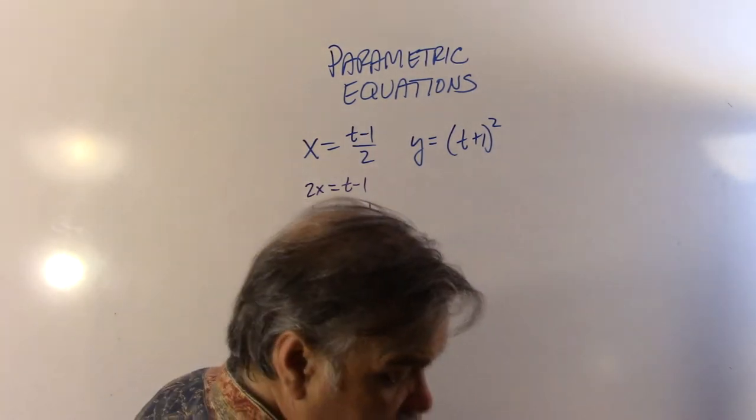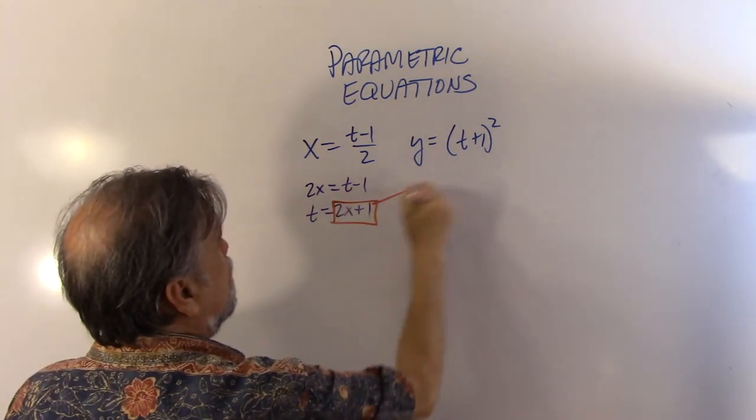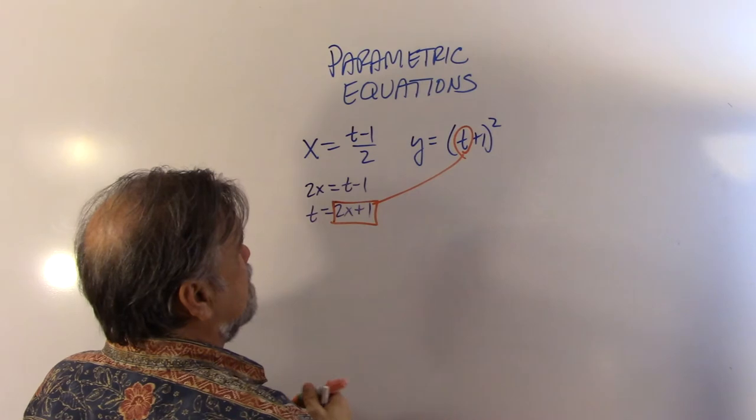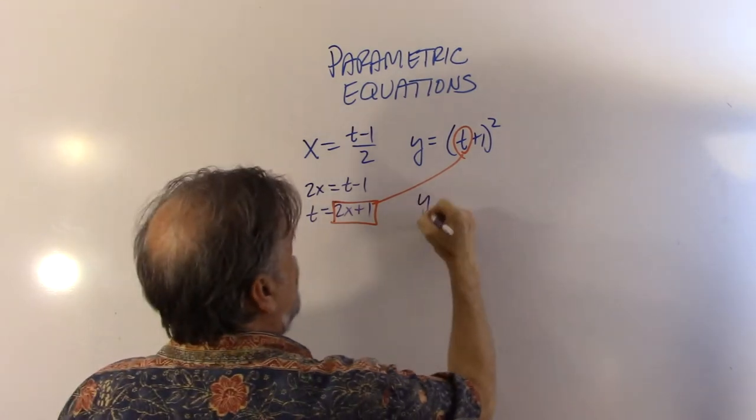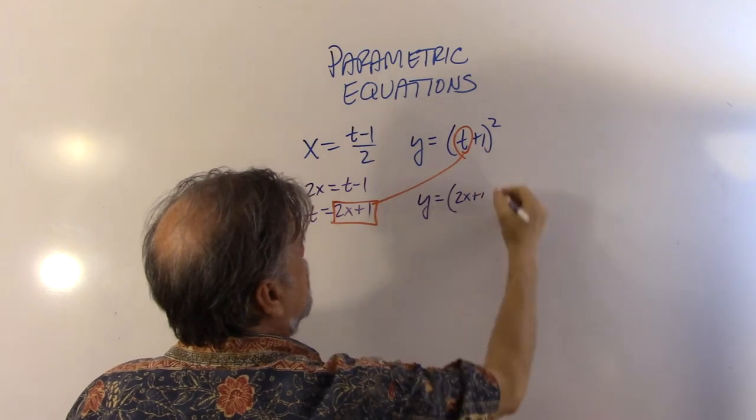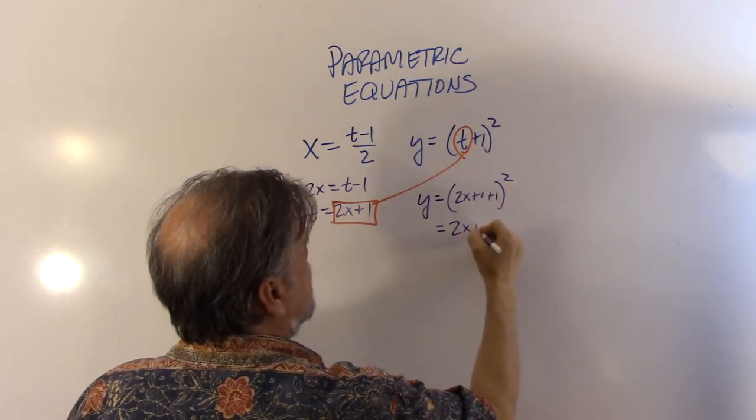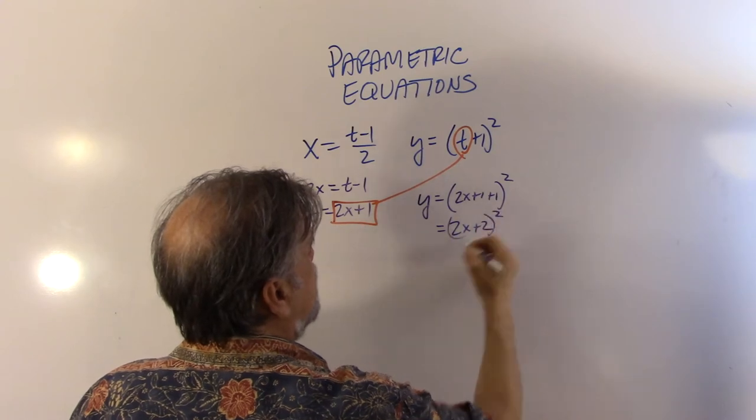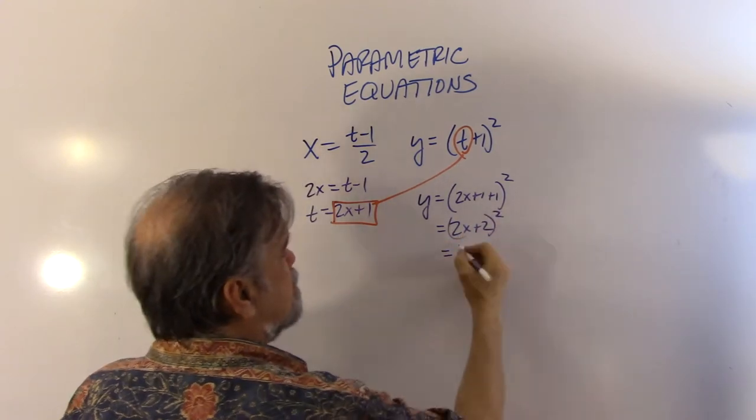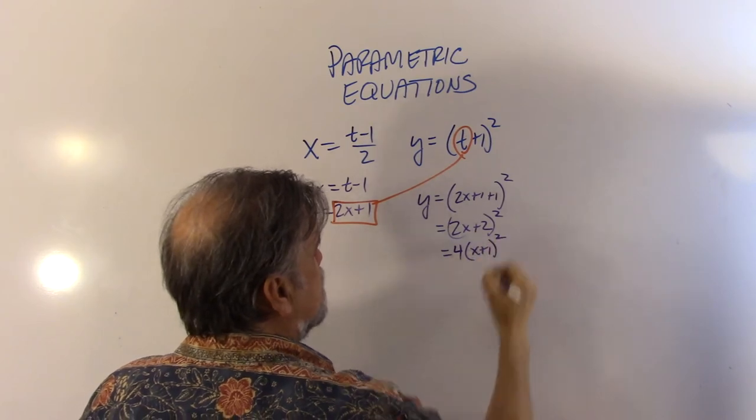Now I'm going to take what I have for t here, and I'm going to put it right in there, where I see the t. So now I'm going to have y equals (2x+1+1) squared, which is (2x+2) squared. And if I factor out a 2 squared, which is 4, I get 4 times (x+1) squared.